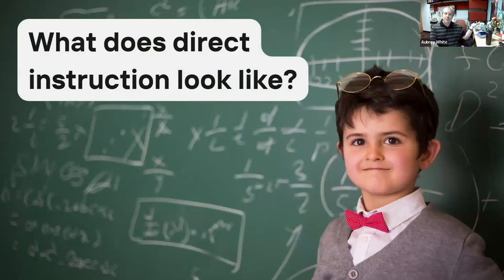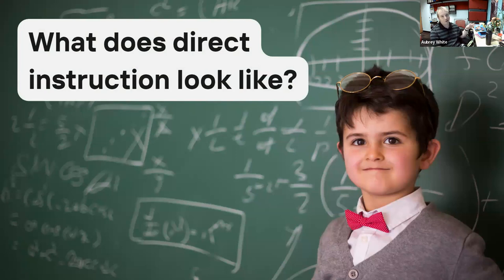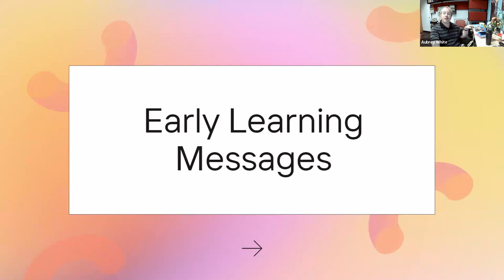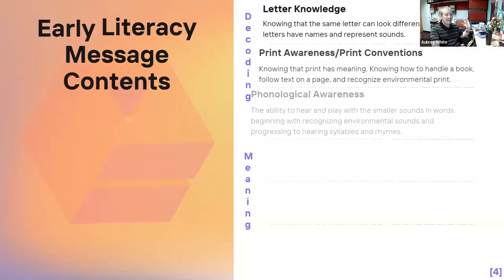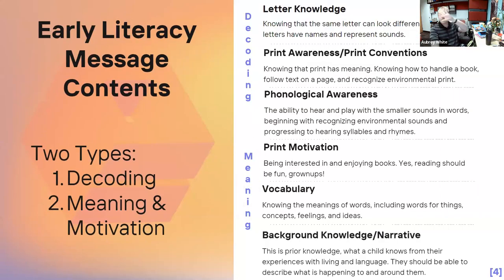So what does direct instruction look like? Maybe you didn't sign up to be a teacher when you became a story time presenter, or maybe you haven't done a lot of teaching in the past. Fortunately, it's very easy — this is not a college level course, your audience is still zero to five and their parents and caregivers. The way we do this is through the early learning message. An early learning message is simply a brief statement about a certain skill that a child has to develop in order to be able to read.